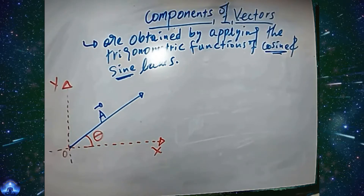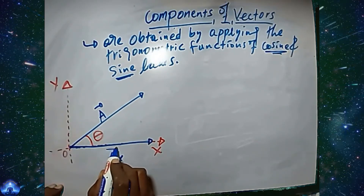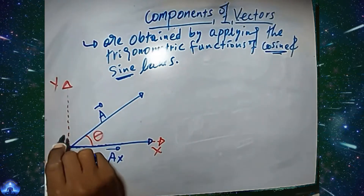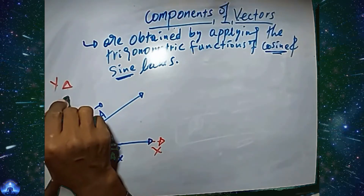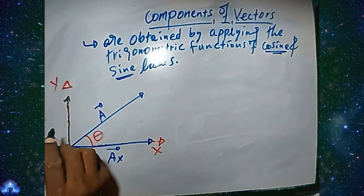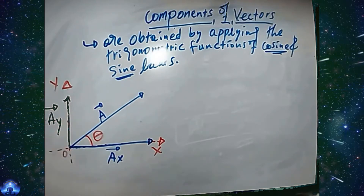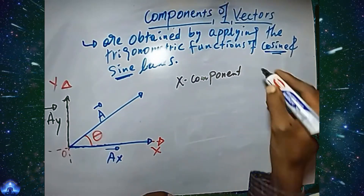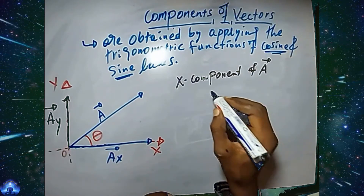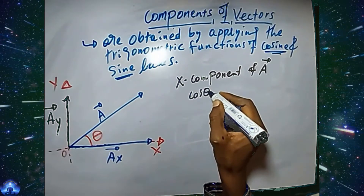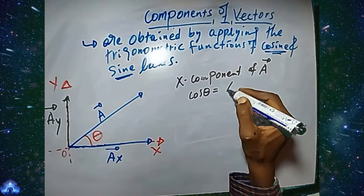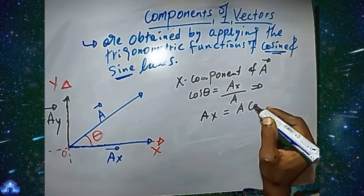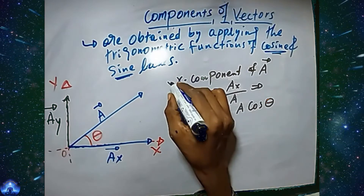This is Ax, the component of vector A in the x-direction. For the x-component of vector A, cosine of theta is equals to Ax over A. This gives us Ax equals A times cosine of theta.